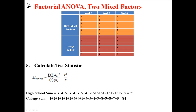We find the sum of each condition: we have 93 and 84. Those go on top of the first fraction — we take the sums, square them, and add them together. The rest of the equation we already know: B is 3, N is 6, capital N is 36, and T (the total sum) is 177, which is 93 plus 84. Putting all that in, we find a sum of squares for school of 2.25.